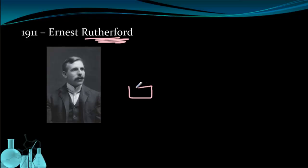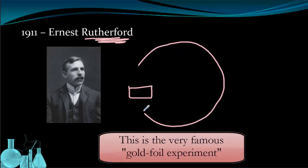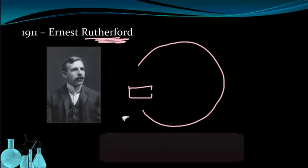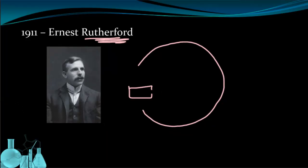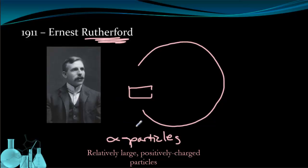Basically, Rutherford had a lead box and he set up a circular detector screen around it like that. There was a small hole in this lead box and inside the lead box, he placed a radioactive source. And that radioactive source emitted something called alpha particles. This little symbol here is the lowercase Greek letter alpha and alpha particles are relatively large compared to a normal atom. They're relatively large positive particles.